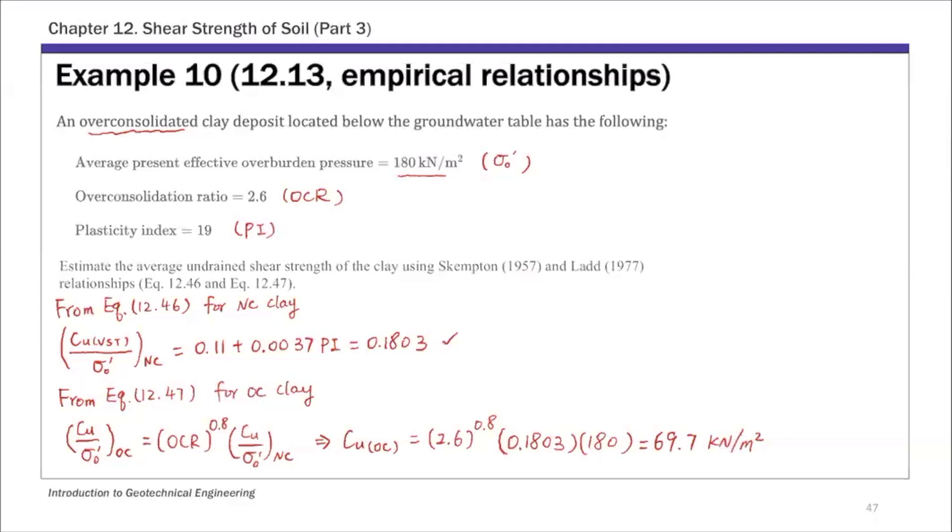So that's a very simple example. Basically, we use these empirical relationships to estimate the undrained shear strength. That's example 10.